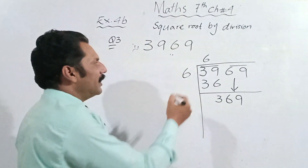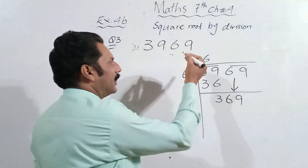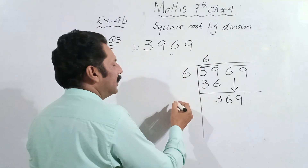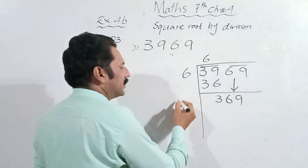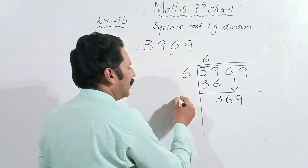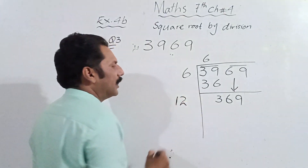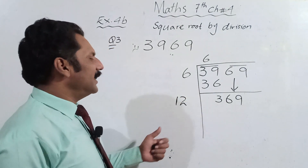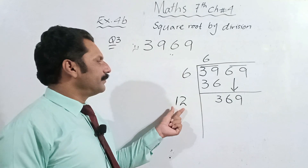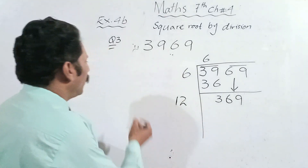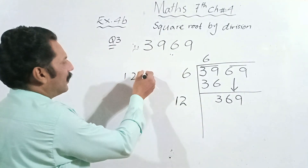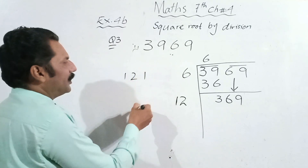The next step is we take the double of our quotient. The quotient is 6, so double of 6 is 12. We write 12 here. Now the question is: by which number do we increase 12?